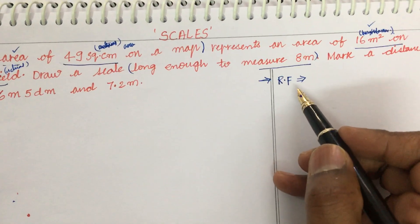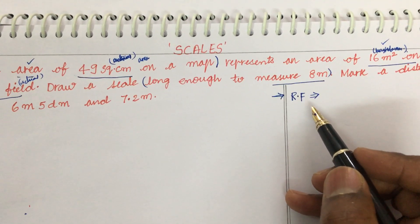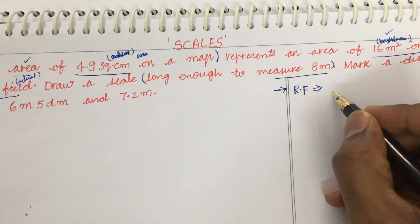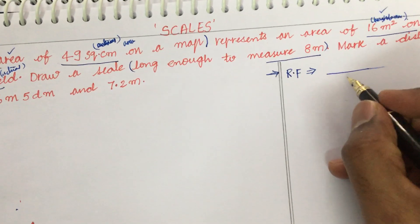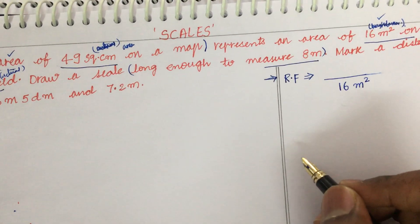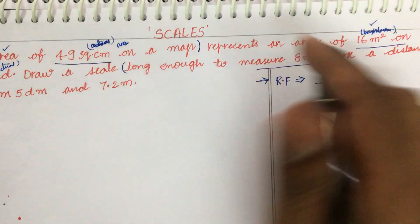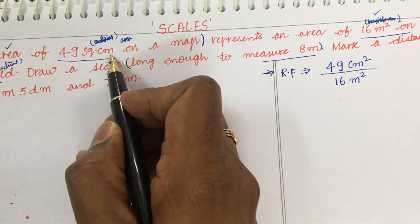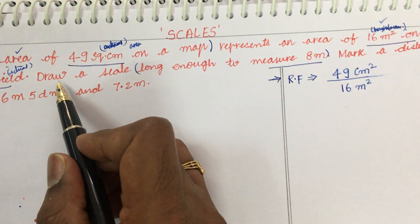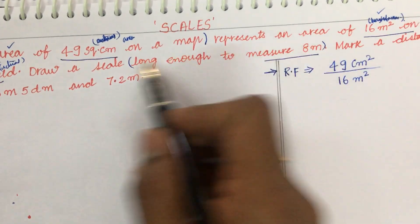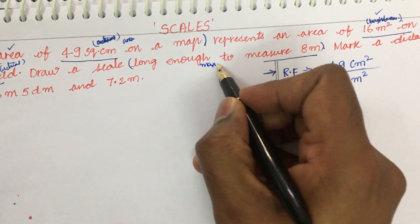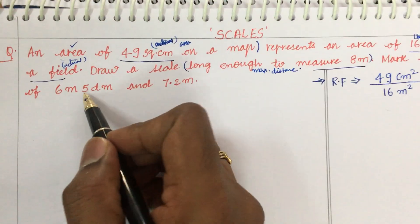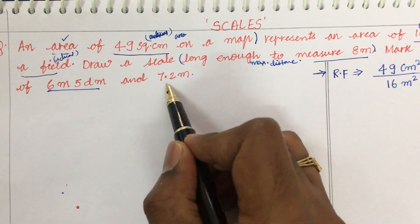As per the definition of the representation factor, RF is the ratio of linear quantities. The actual area is 16 square meters, and the area plotted on the drawing is 49 square centimeters. It is also given that the scale should be long enough to measure 8 meters — that is the maximum distance — and we need to mark distances of 6 meters 5 decimeters and 7.2 meters.